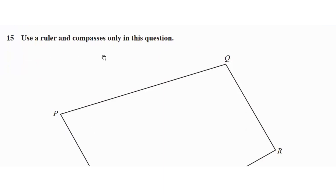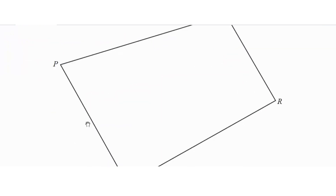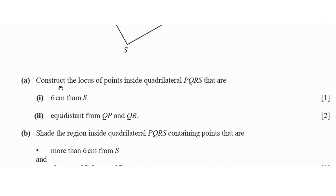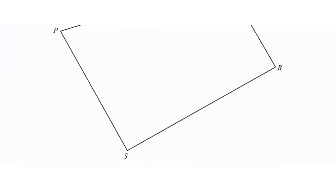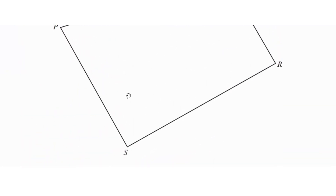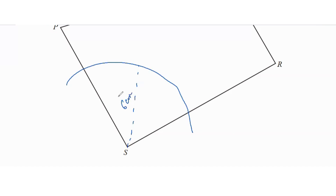Using a ruler and compasses only, we have a quadrilateral and we need to construct the locus of points inside this quadrilateral that are 6 centimeters from S and equidistant from QP and QR. If it's 6 centimeters from S, you open your compass to 6 centimeters, place it at S, and draw an arc. This distance should be 6 centimeters based on how much you've opened the compass.